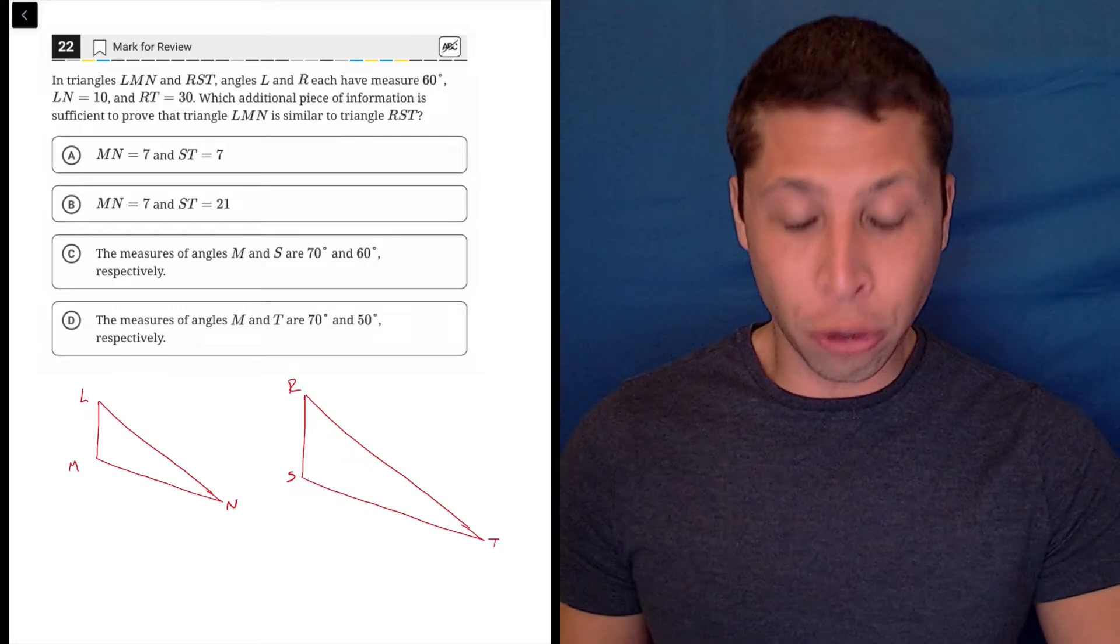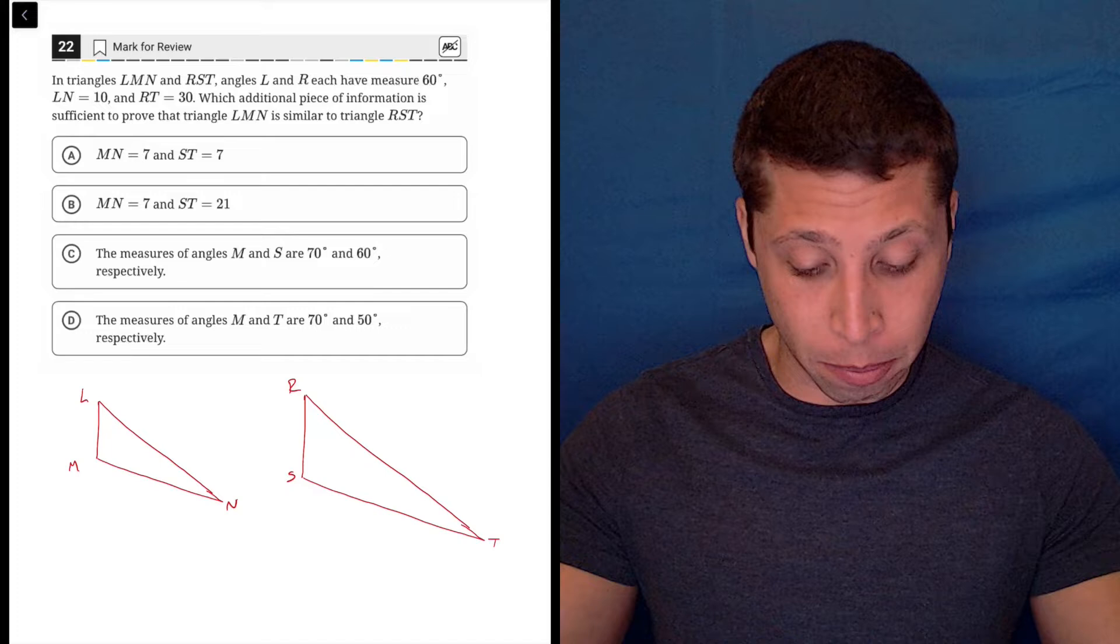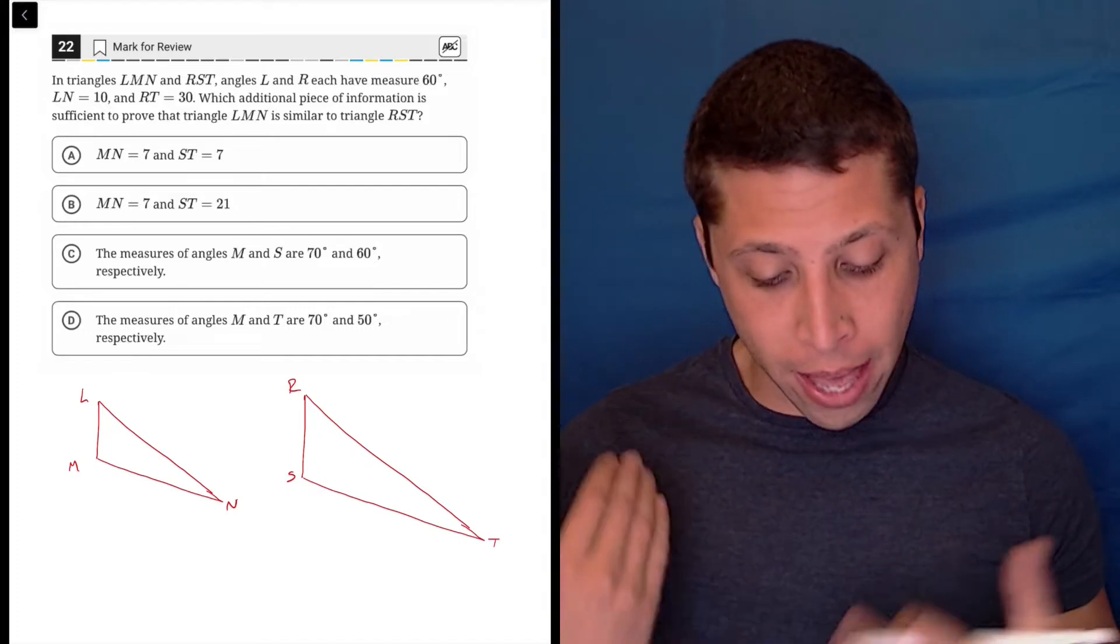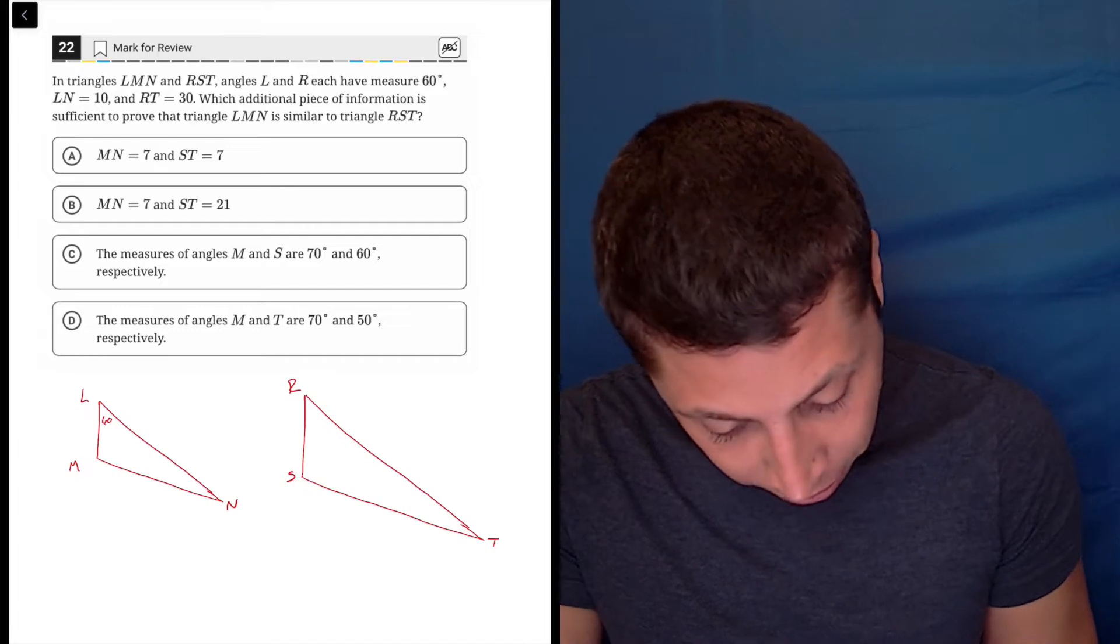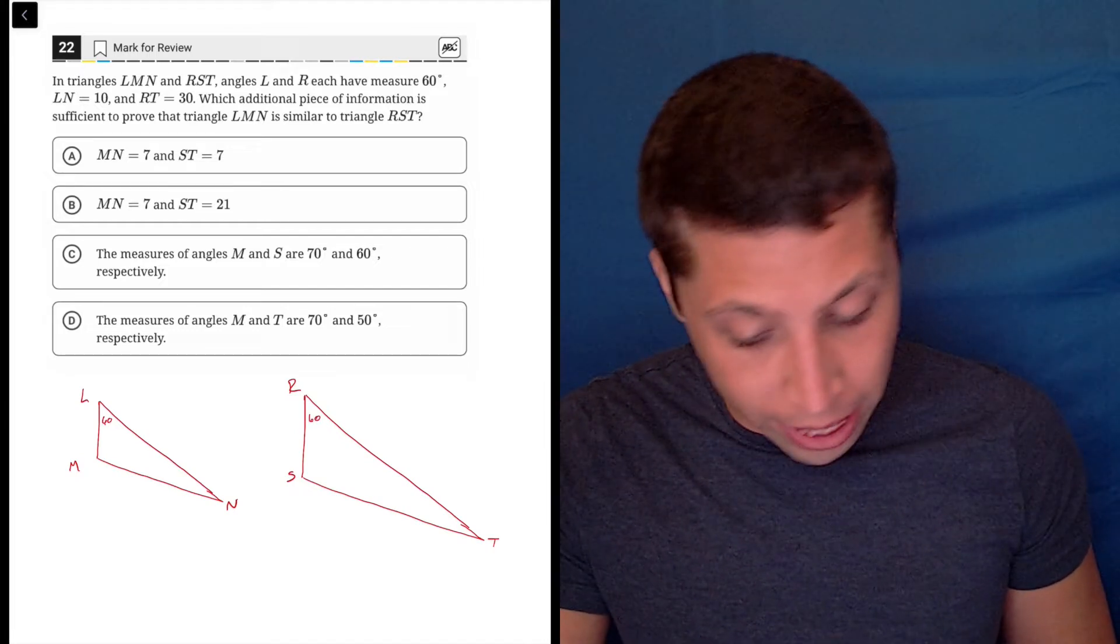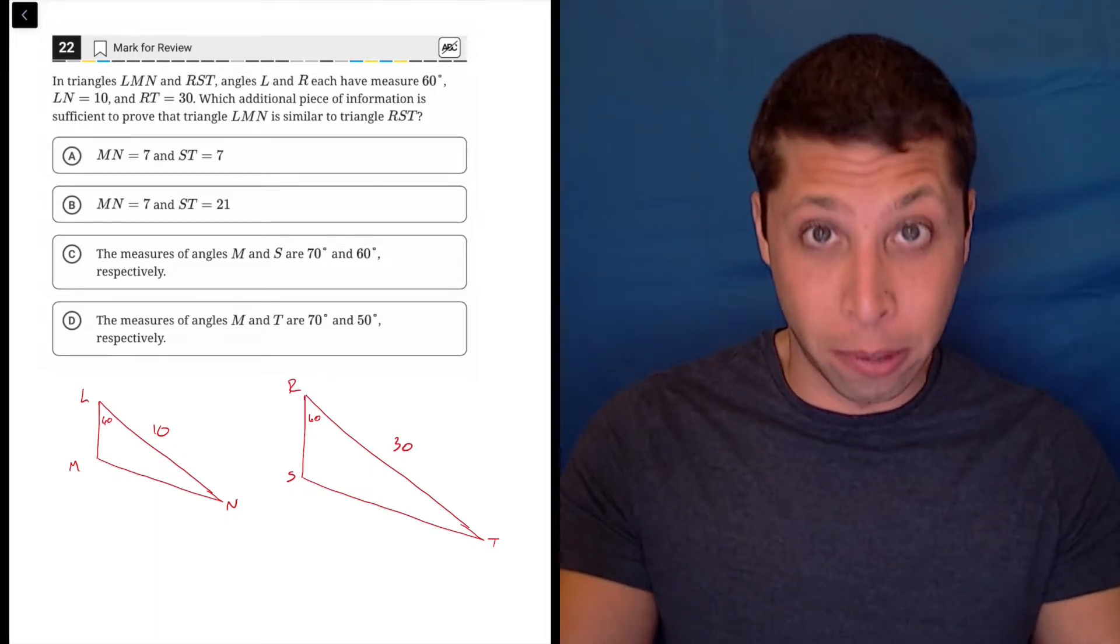So I already drew some triangles, I assumed that they were similar, so I drew them as if they were similar. I labeled them LMN, RST. We know that L and R each have measures of 60, so let's put that in there, and we know that LN is 10 and RT is 30, so it looks like there's a ratio of 1 to 3 if they're similar.